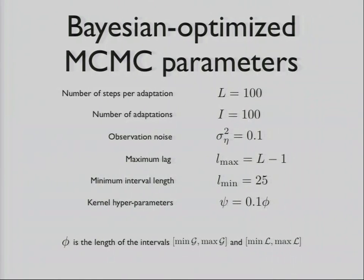Our method has a bunch of parameters, which we set arbitrarily. We didn't actually have to put much work into tuning this. For instance, for the number of adaptations and number of steps for adaptation, we used 100 samples. The number of adaptations we used overall was also 100. So overall, we used 10,000 samples to learn the parameter space. Then we set up observation noise and a lag and a minimum interval length. The kernel hyperparameters were just set to be proportional to the size of the intervals that we're looking at for each dimension.